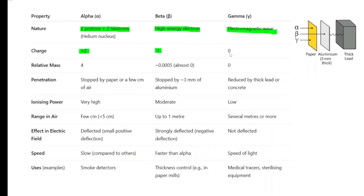Relative mass. Alpha particles, two protons, two neutrons, so that's four. Beta, really small, almost zero. Gamma is a wave, so no mass.